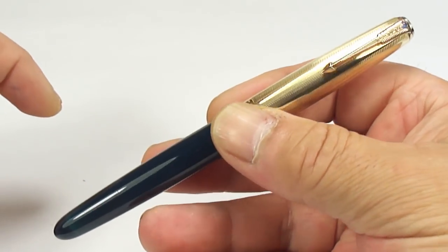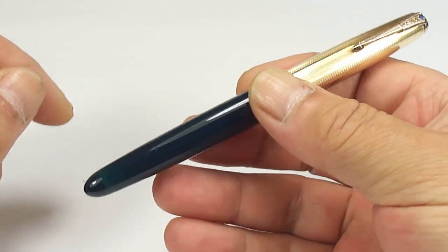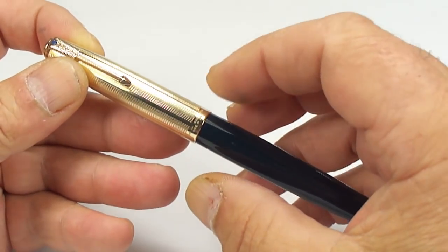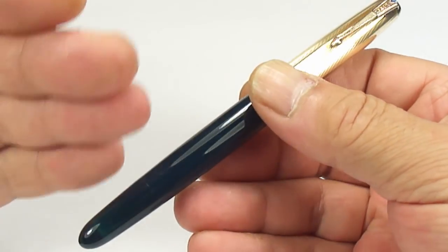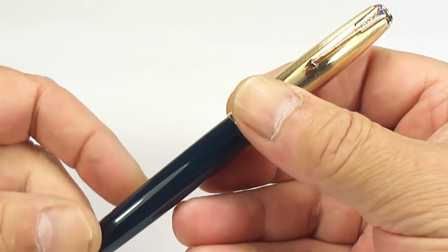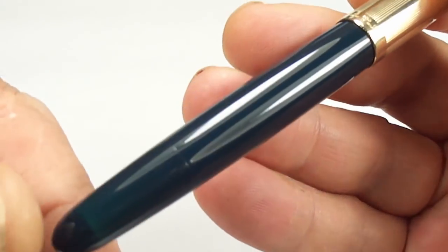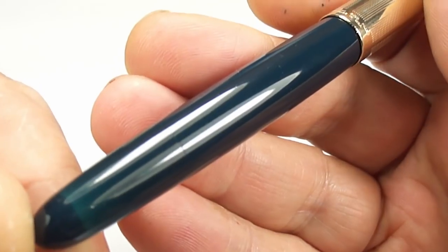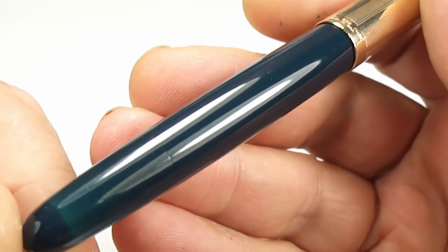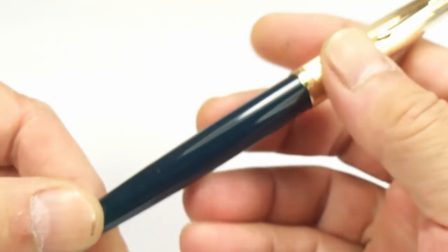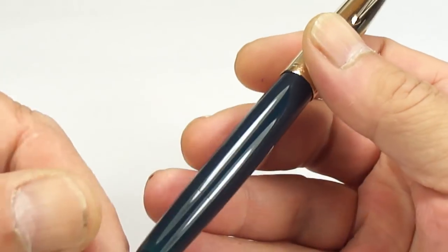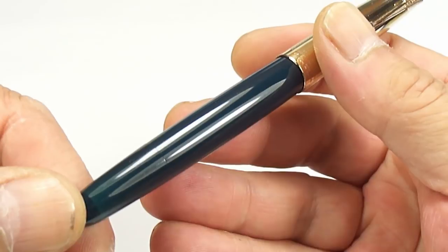This is actually a Vacumatic fountain pen. Parker 51 made the Vacumatic in numerous different colors, different trim, different caps, etc. What we've got here is the Parker 51 Vacumatic in a cedar blue color. It's like a darker shade of the teal, but I believe it's called the cedar blue.